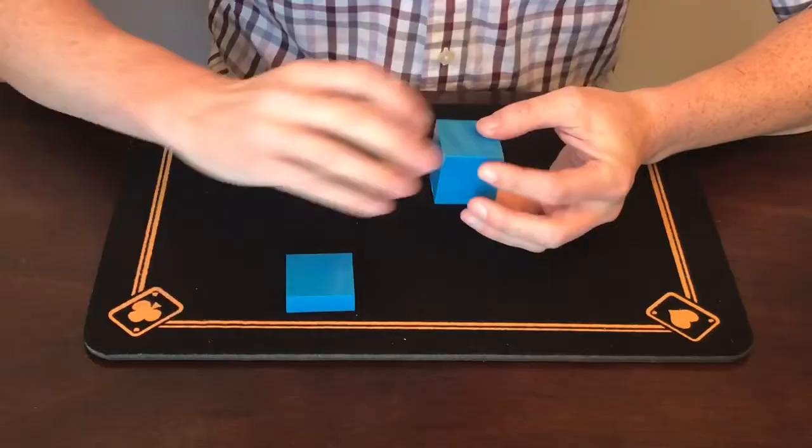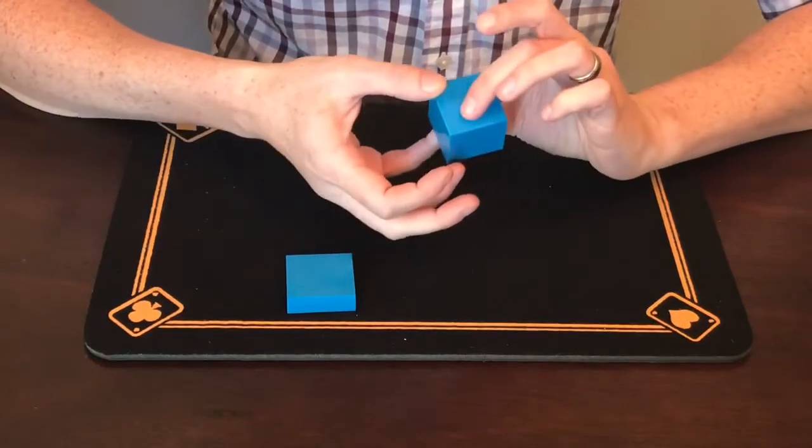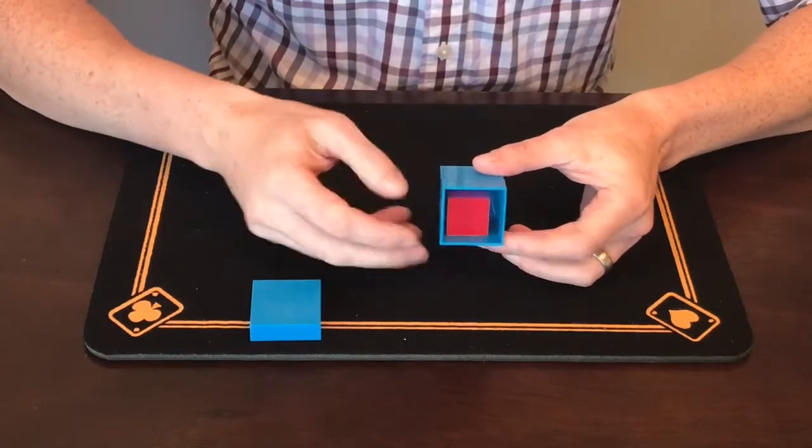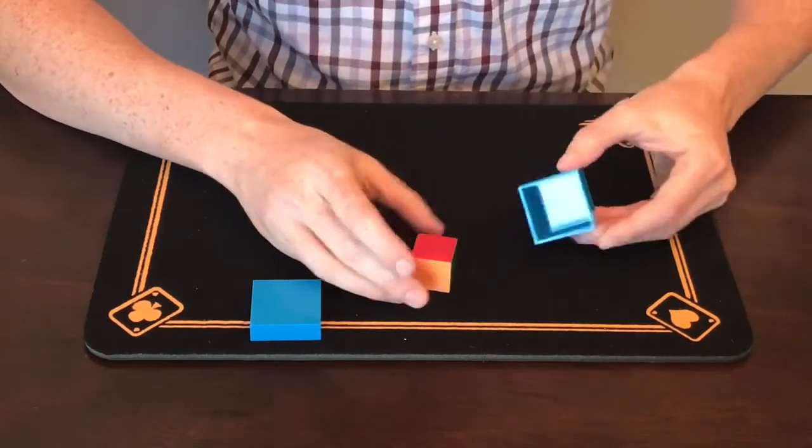So I'll take the lid off. And again, we should have inside the color red. And sure enough, facing upwards is the color red right there.